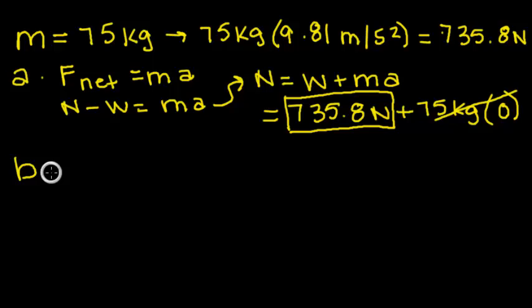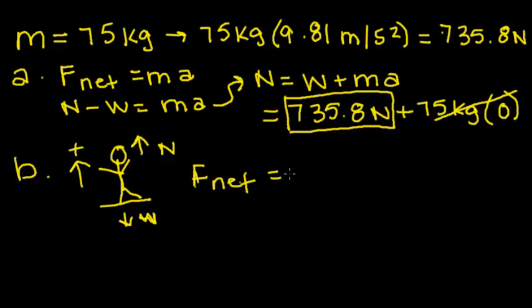For part B, we have the man moving upward, so we're going to know that it's going to go in a positive direction. Here's a free body diagram in the elevator. This is his weight and normal force. Since we now have an acceleration, we're not going to use zero, so the new problem is going to be F net equals MA.